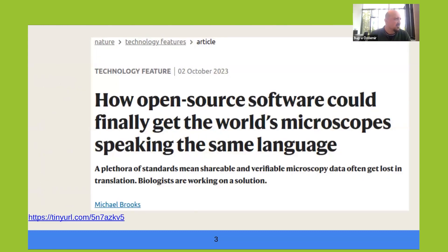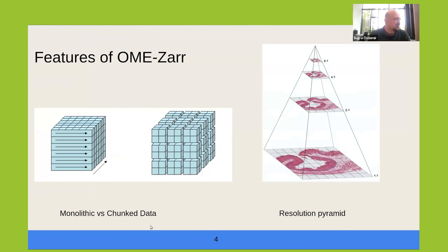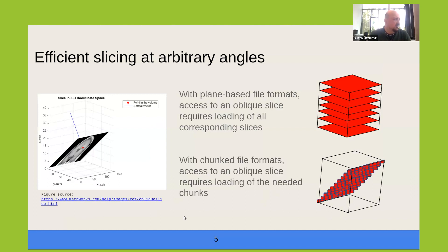There is a recent technology feature article that's a nice read to learn more about this standardization process. There are two fundamental features of OME-Zarr that give it better access performance: one is the chunked storage of image data, in contrast with plane-based storage of monolithic file formats; and the other is native support for storing resolution pyramids, where multiple resolution layers are stored in different directories in the OME-Zarr hierarchy.